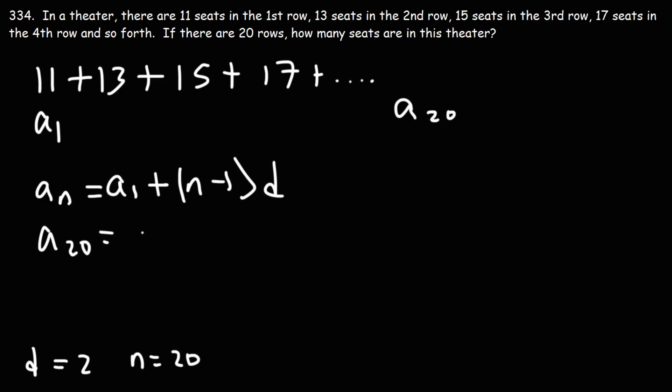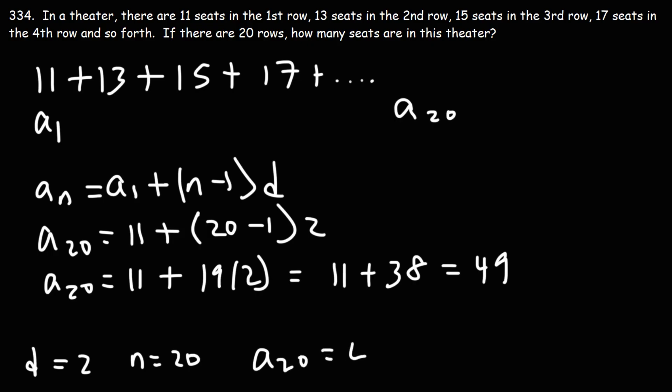So a sub 20. a sub 1, we know it's 11, that's the first term. n is 20. The common difference is 2. 11 plus 2 is 13, 13 plus 2 is 15, and so forth. Now 20 minus 1 is 19, and 19 times 2 is 38. And then 38 plus 11 is 49. So the value of the 20th term is 49.